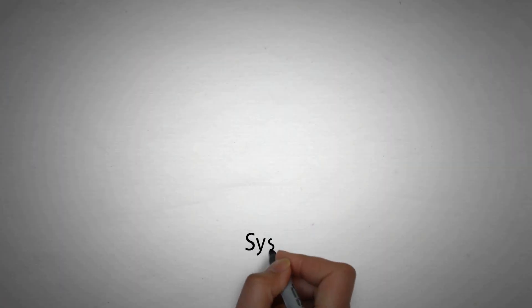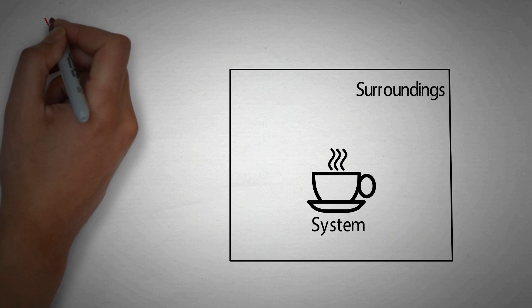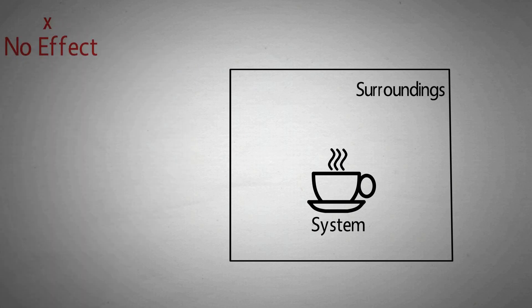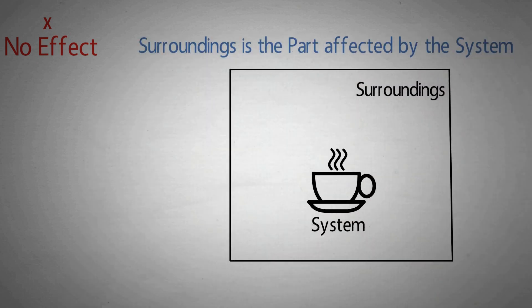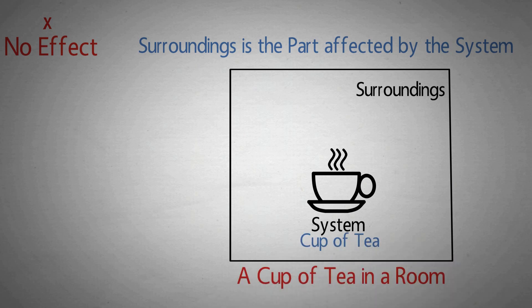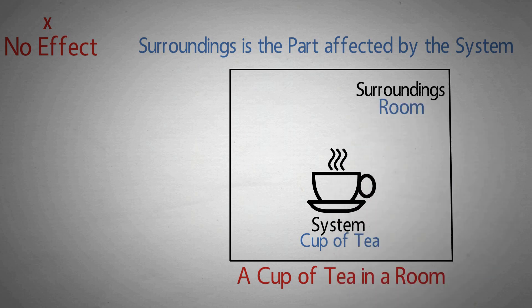Practically देखा जाए तो हम observe करेंगे कि system, surrounding के कुछ ही portion को affect करता है। System से बहुत दूर कोई भी point लें तो उस पर system का कोई effect नहीं होगा। So practically surrounding सिर्फ उस part को माना जाता है जिस पर system का कोई effect हो। Example: a cup of tea in a room — cup of tea इस case में system है और room is our surrounding।